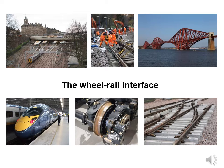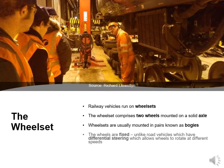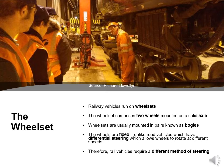Now we're going to have a look at the wheel-rail interface. Rail vehicles run on wheel sets. The wheel set comprises two wheels mounted on a solid axle. Wheel sets are usually mounted in pairs known as bogies. The wheels are fixed and, unlike road vehicles which use differential steering allowing wheels to rotate at different speeds, rail vehicles require a different method of steering.